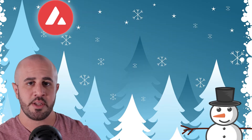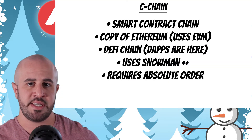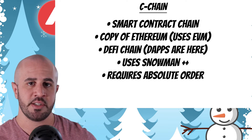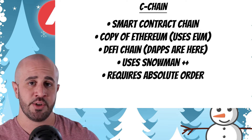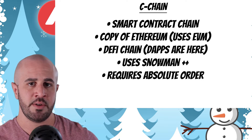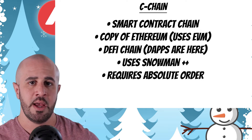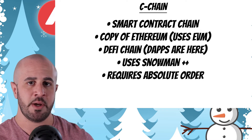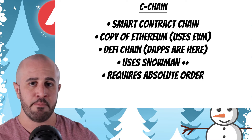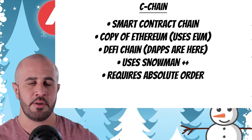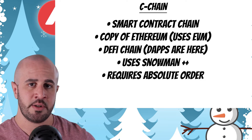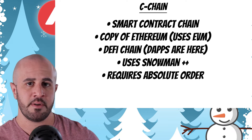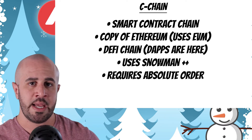The first chain is called the C chain, C being short for contract. This is the chain that has smart contracts built on it — it's a direct copy of Ethereum's code and it uses the Ethereum Virtual Machine. This makes it easy for developers to basically drag and drop their Ethereum applications and bring them over onto Avalanche.